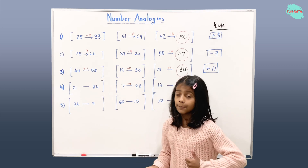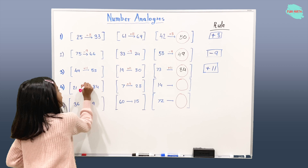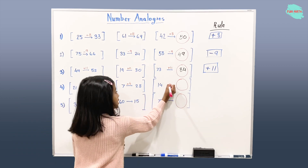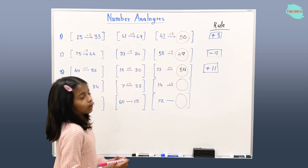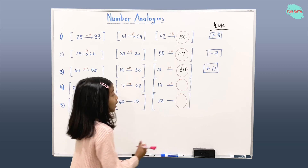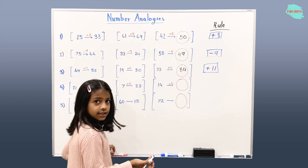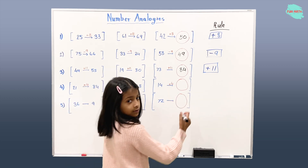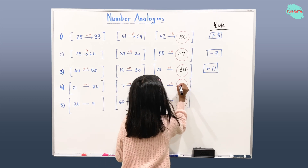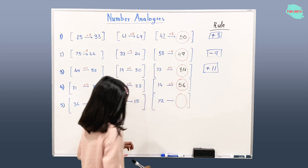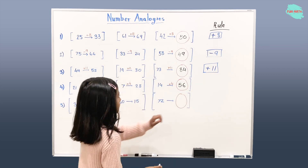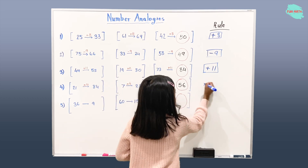That's correct. So we're going to apply that same rule over here: 14 times 4. What will it give us? It should give us 56. And the rule is times 4.